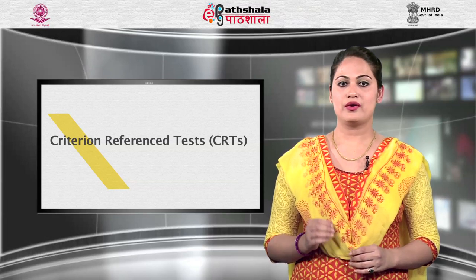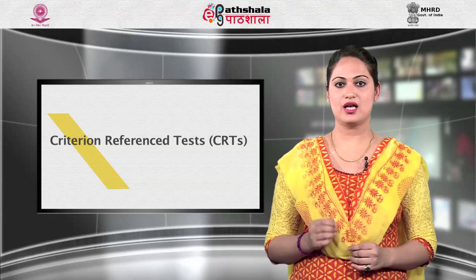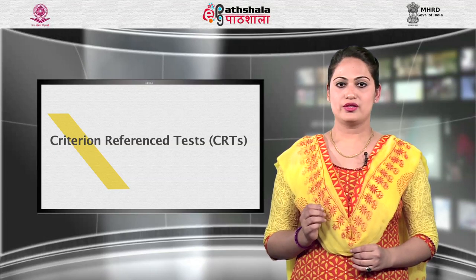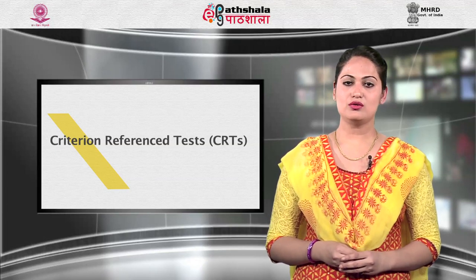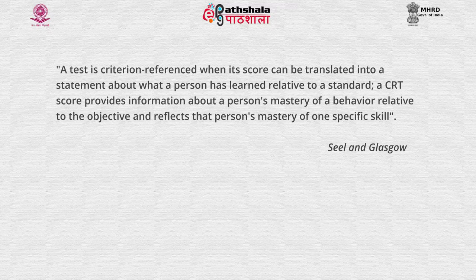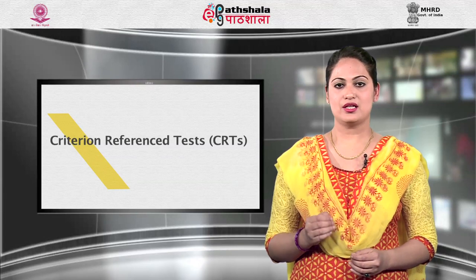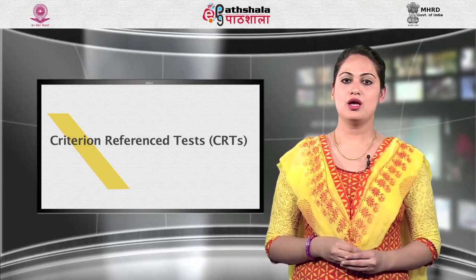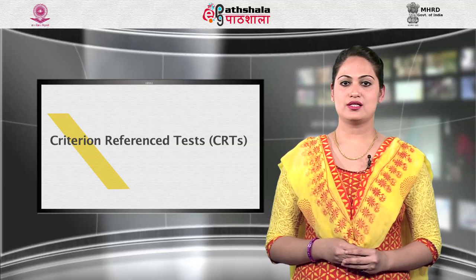Another type is criterion-referenced tests (CRTs), also referred to as content-referenced or objective-referenced tests. According to Seal and Glasgow, a test is criterion-referenced when its score can be translated into a statement about what a person has learned relative to a standard. A CRT score provides information about a person's mastery of a behaviour relative to the objective and reflects mastery of one specific skill. Typically, a cut-off score is set and those who meet or exceed the score pass the test. Any number of test takers can pass a CRT.